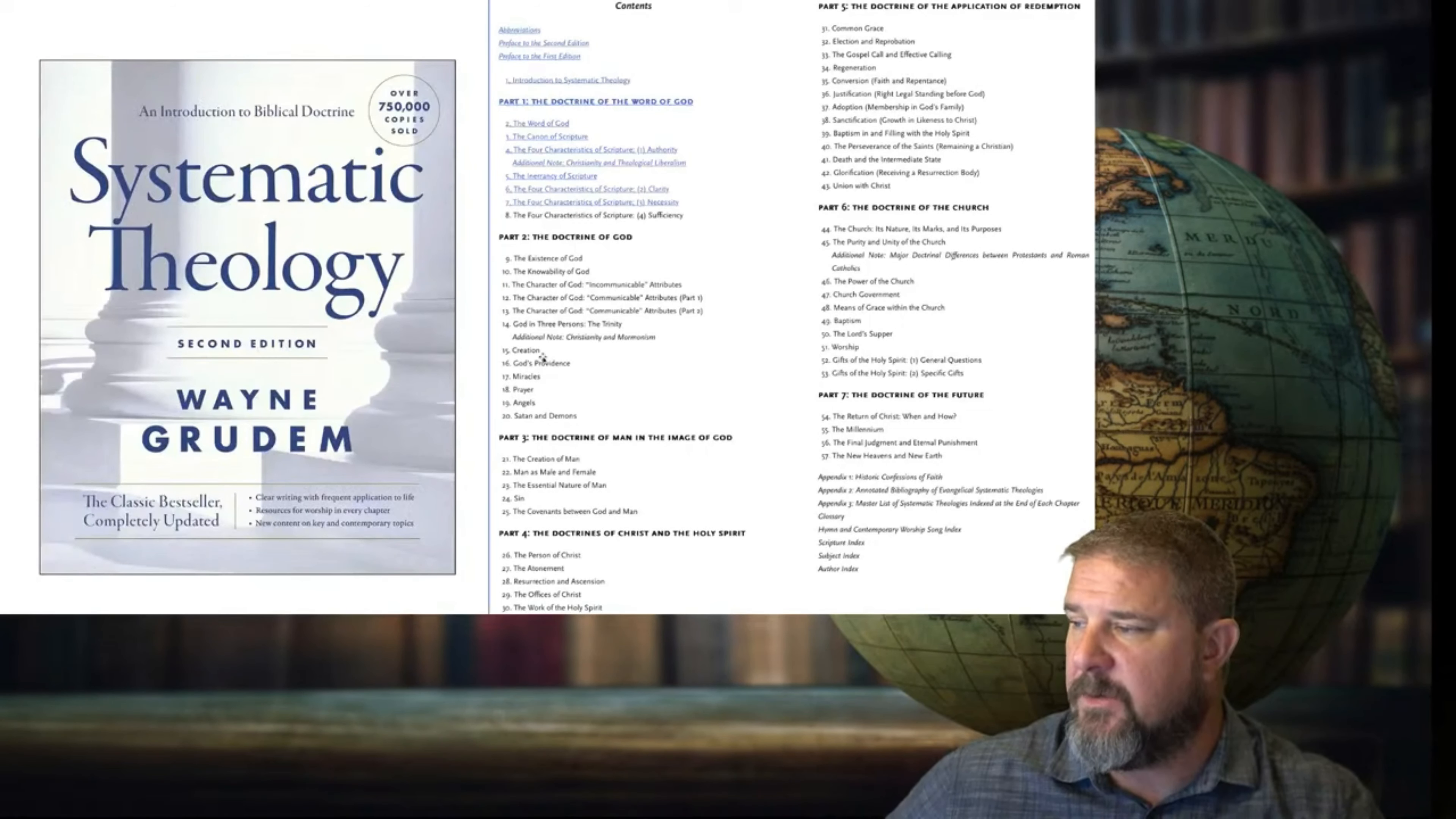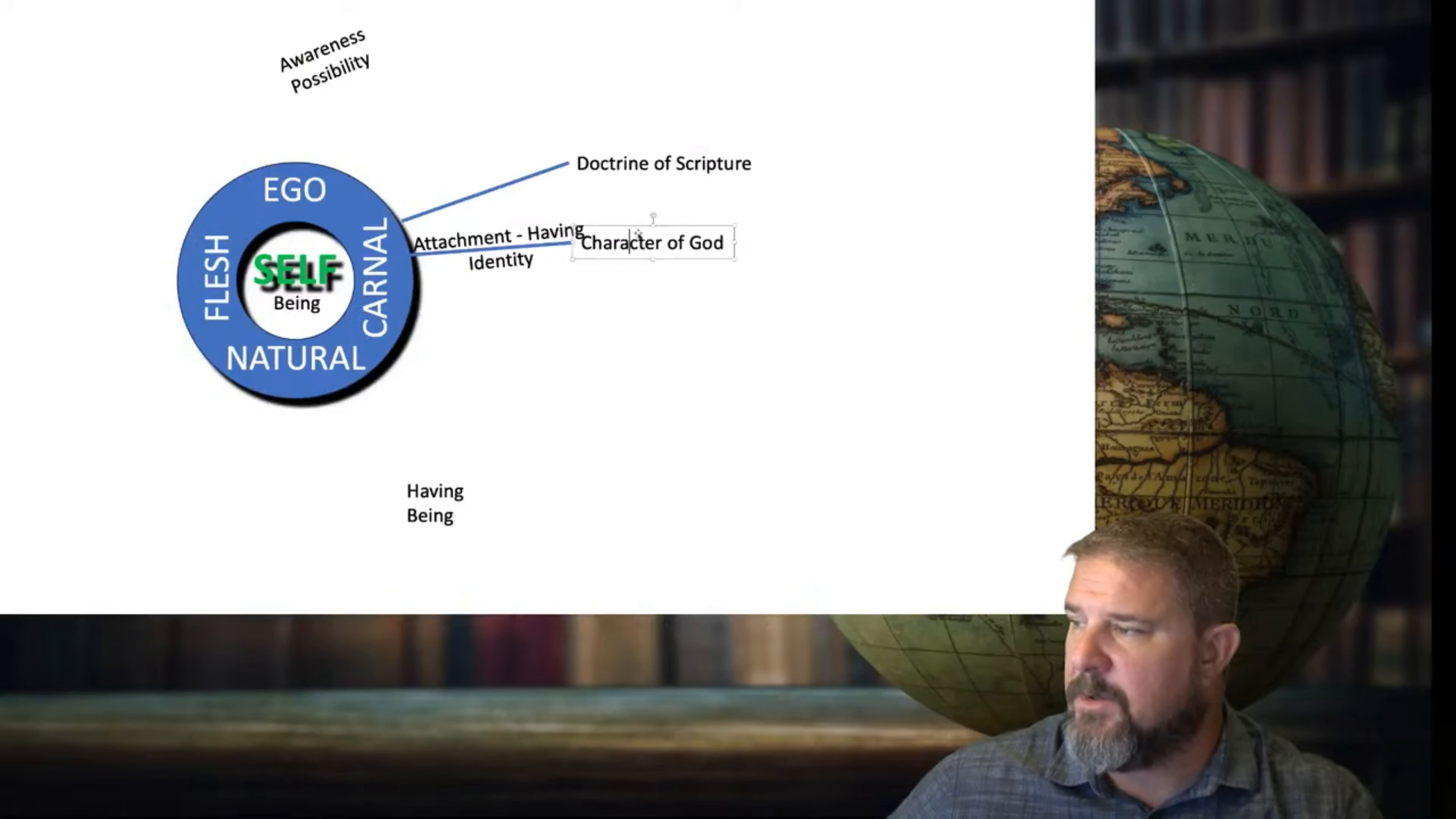What else do we have in here? Creation is a good one. You got the character of God. I could just take these three things over here. Say we could put creation in there. We could put trinity in there. We could put all three of those together. And then again, the question would be, how are you relating to those?